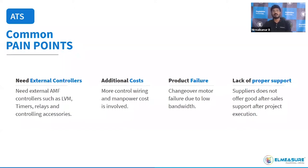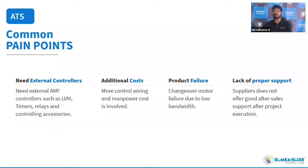After-sales support is very important for automatic transfer switches because the ATS is installed on the incoming side of industries and critical facilities — any complaint brings the total business operation down. Across India we have a very good customer support team with 45-plus customer support engineers. We also provide 18 months warranty, while most switchgear products offer a maximum of 12 months.